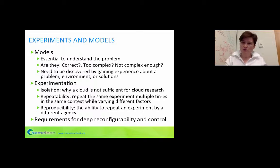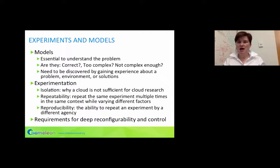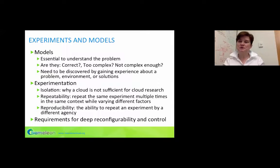When we want to reason about our world, we construct models — they are essential to our understanding of the problem. If you run an experiment on your workstation and discover something true of your workstation, that doesn't have much significance. But if you construct a model, develop a new caching algorithm, and verify it on relevant architectures, that is of great interest. However, models might be incorrect, too complex, or not complex enough to capture the relevant phenomena.